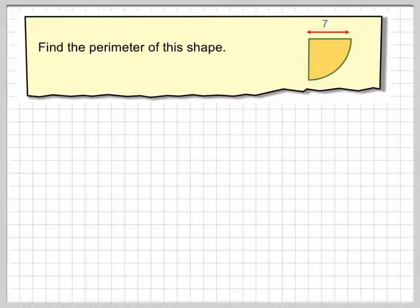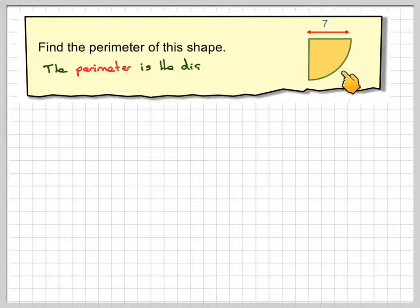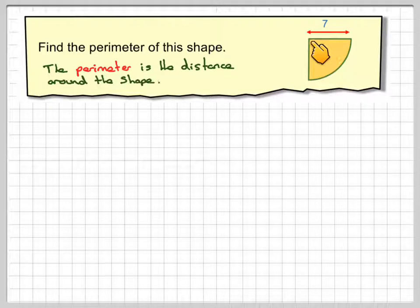In this video we're asked to find the perimeter of this shape. Now first of all, we've got to decide what the perimeter is. The perimeter is the distance all the way outside a shape.